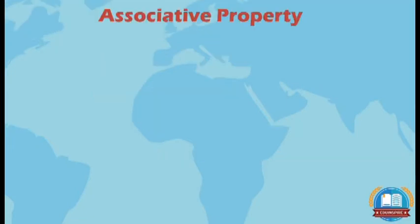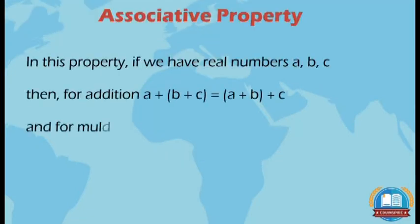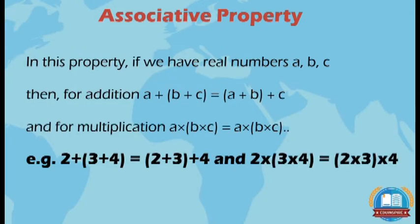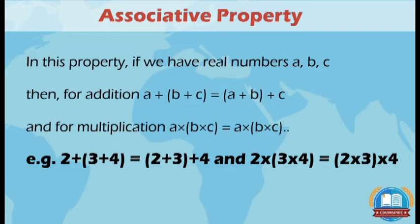The second property is associative property. If we have real numbers A, B, and C, then for addition, A + (B + C) = (A + B) + C, and for multiplication, A × (B × C) = (A × B) × C.